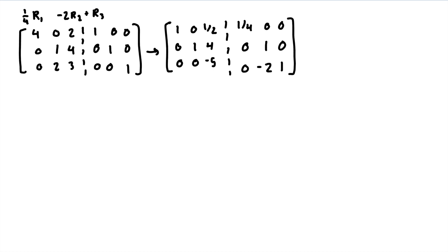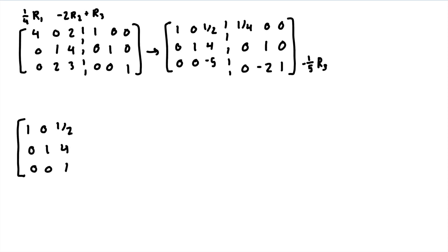Next, we're going to simplify the third row and multiply it by negative 1/5. The first two rows stay the same, but the third row becomes 0, 0, 1. Now onto the right side — again, the first two rows stay the same, but the third row becomes 0, 2/5, negative 1/5.